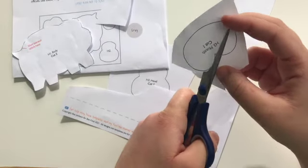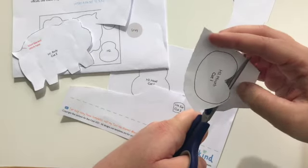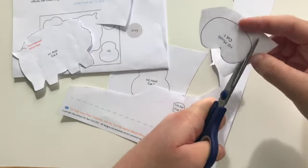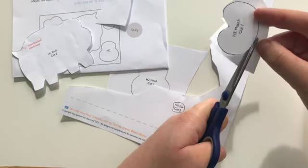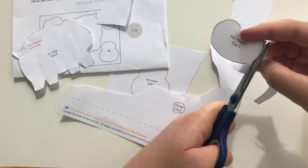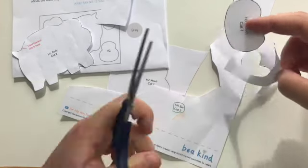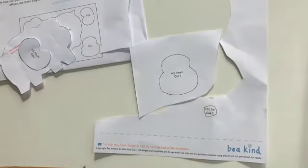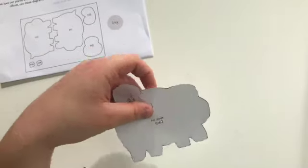Try and get them as neat as possible, as this will mean your shapes are nice and accurate and they'll match up nicely when you're sewing your animal together. Repeat that for all your pieces.